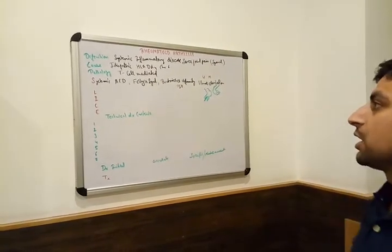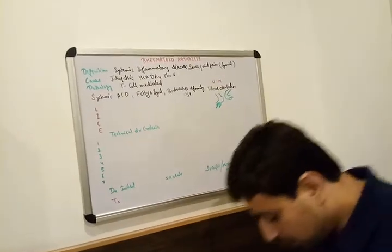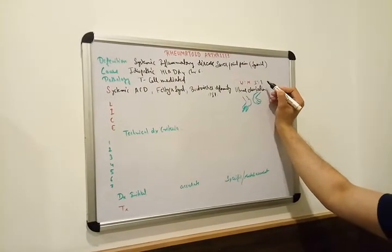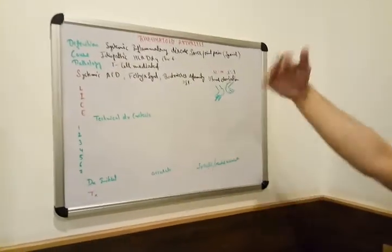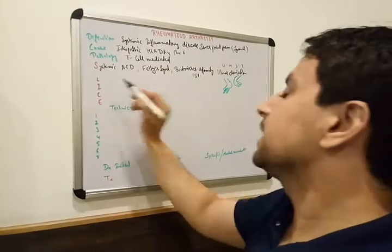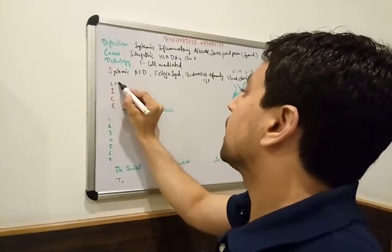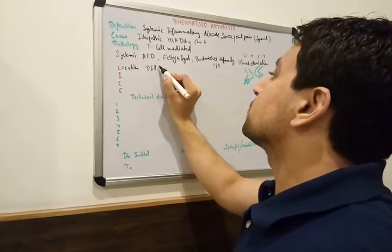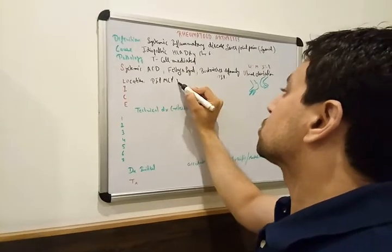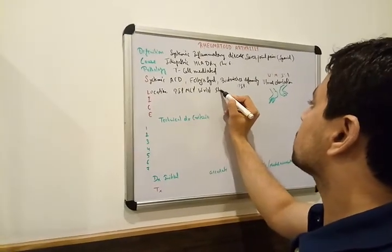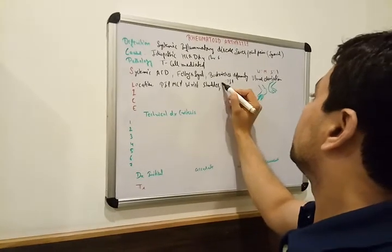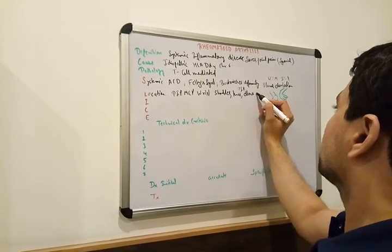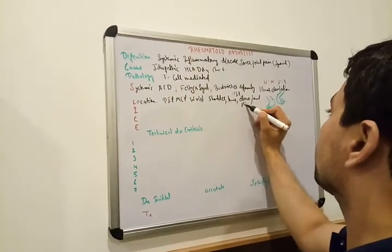This is known as ulnar deviation. In Rheumatoid Arthritis, the ratio of female to male is 3 to 1 — if 3 women are affected, 1 male is affected. L in SLICE indicates location: PIPs, MCPs, wrist, shoulder joint, knee, elbow, and the hip joint, which is the most common involvement.